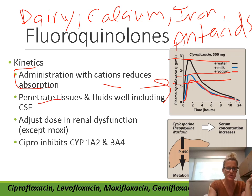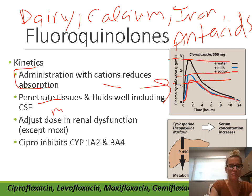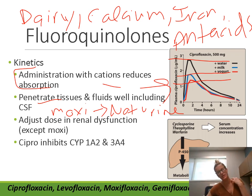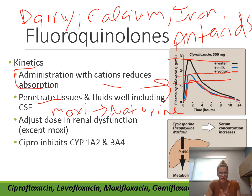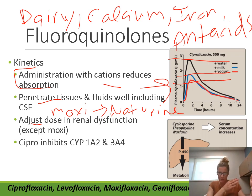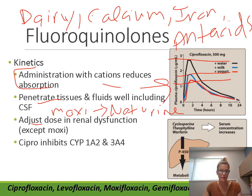Most fluoroquinolones penetrate tissues and fluids very well, including the CSF. One exception: moxifloxacin does not penetrate urine — it gets metabolized by the liver, so the active drug never reaches the urine, which is why moxifloxacin is not used for UTIs. The other agents are cleared by the kidneys, so dose adjustments are needed in patients with renal dysfunction to prevent drug accumulation.